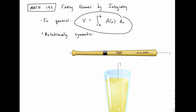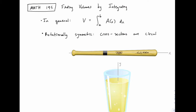Earlier when we did examples with finding the volume by integrating, we had to jump through a lot of hoops to find that cross-sectional area function. It turns out with these rotationally symmetric things, that's a lot easier, because the cross-sections when we cut across them are circular. When we slice this thing, we're going to slice it across the axis of symmetry. So if it's symmetric around the x-axis, we'll slice it perpendicular to that.